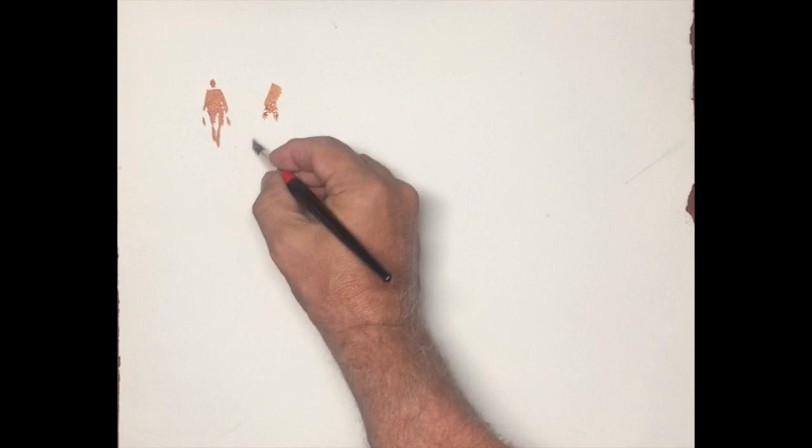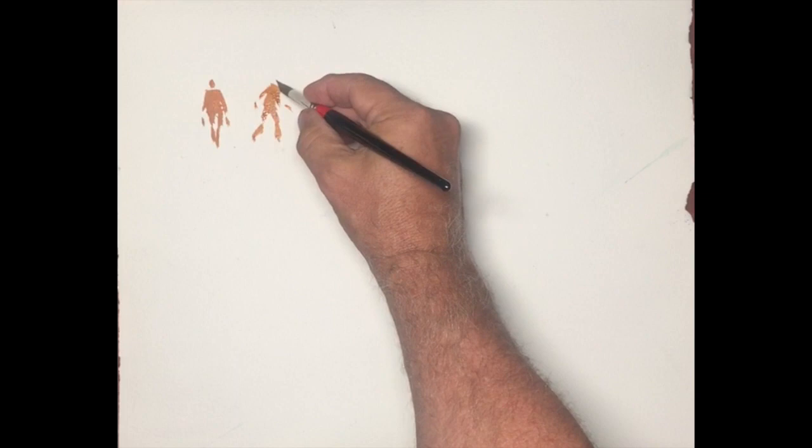You see me here working with a smaller brush, doing some simple figures. Single color, torso first, legs second, arms, head—that's usually the sequence I take.